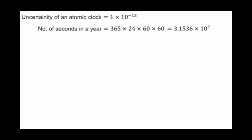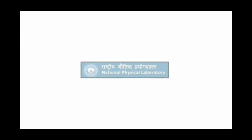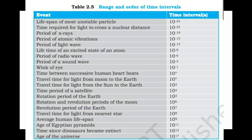Number of seconds in a year is 3.1536 into 10 raise to 7 seconds. Therefore, loss or gain of an atomic clock in one year is only 3 microseconds. That means, when it works for a year, it may gain or lose 3 microseconds. Micro means 10 raise to minus 6. So, that much small error only we will have with an atom clock.